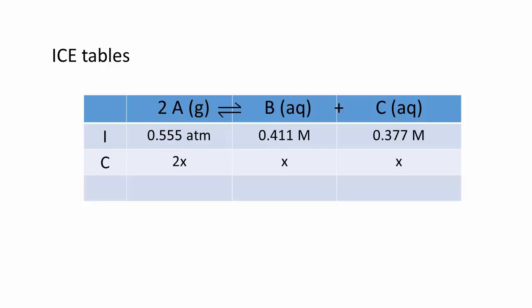All reactant and product gases and solutes have a term in x. For the reactants, a minus sign is in place, and for products, it's a plus sign. Finally, each term is multiplied by the coefficient in the balanced chemical equation. With the I and C rows now determined, the E row is merely the sum of the I and C values. This gives us the equilibrium concentrations and pressures.